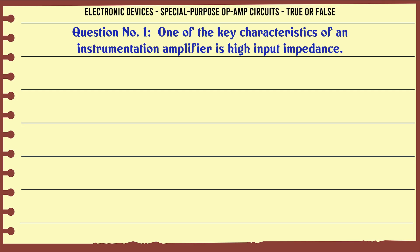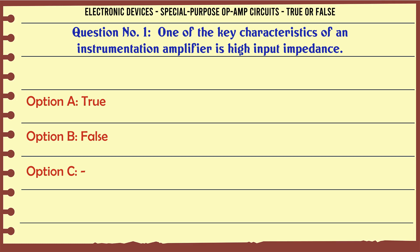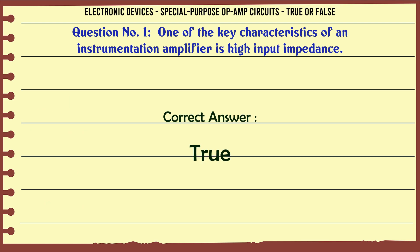One of the key characteristics of an instrumentation amplifier is high input impedance. A. True. B. False. C. D. The correct answer is True.